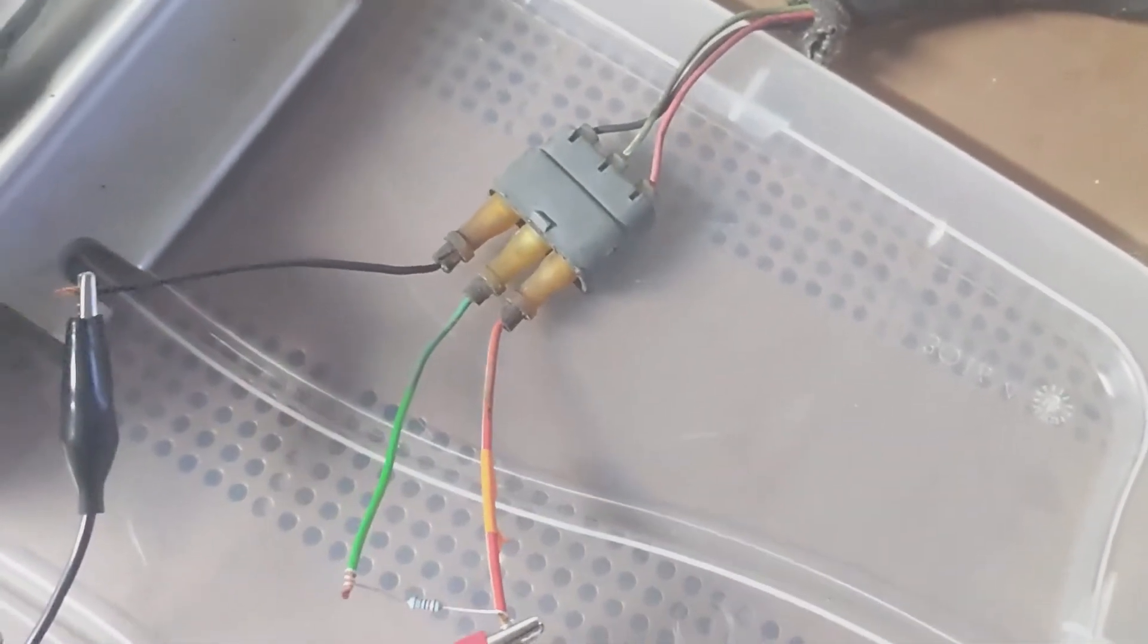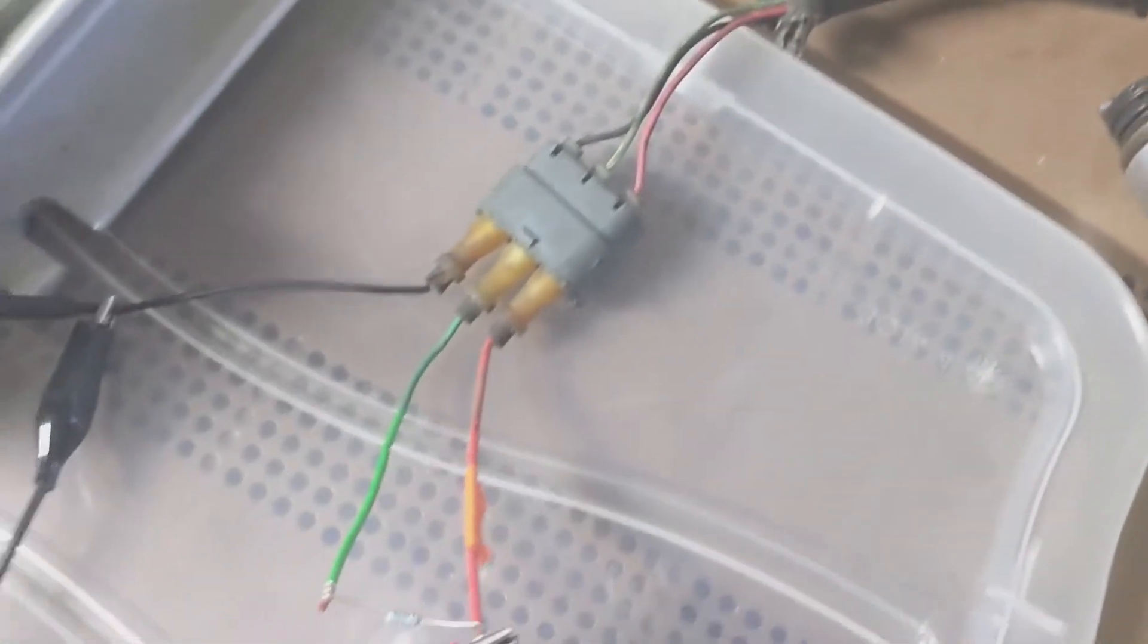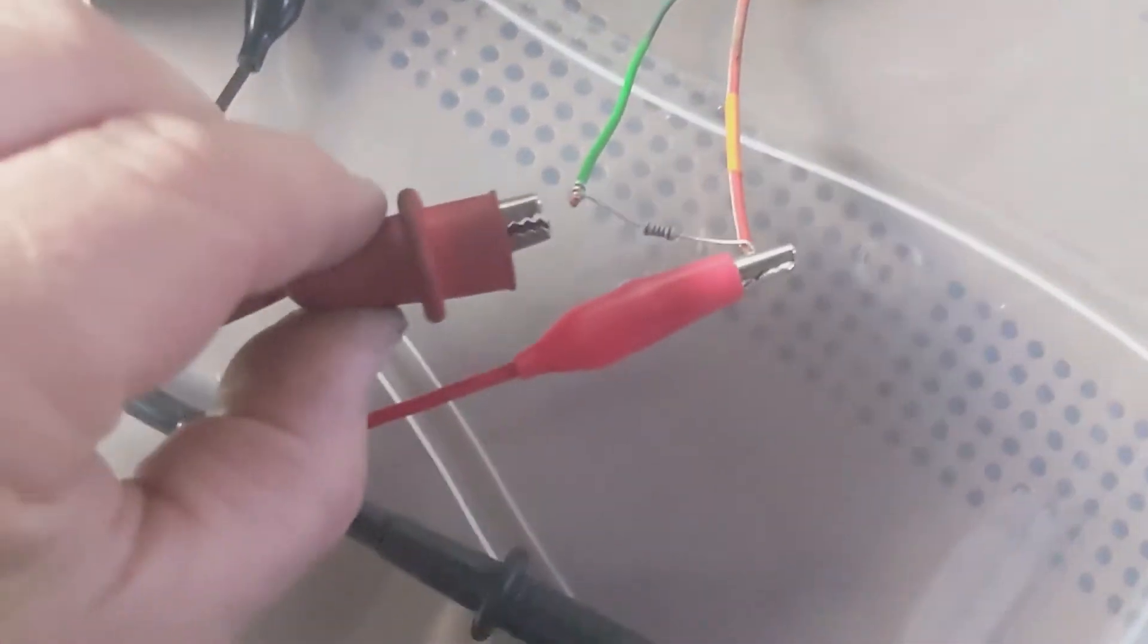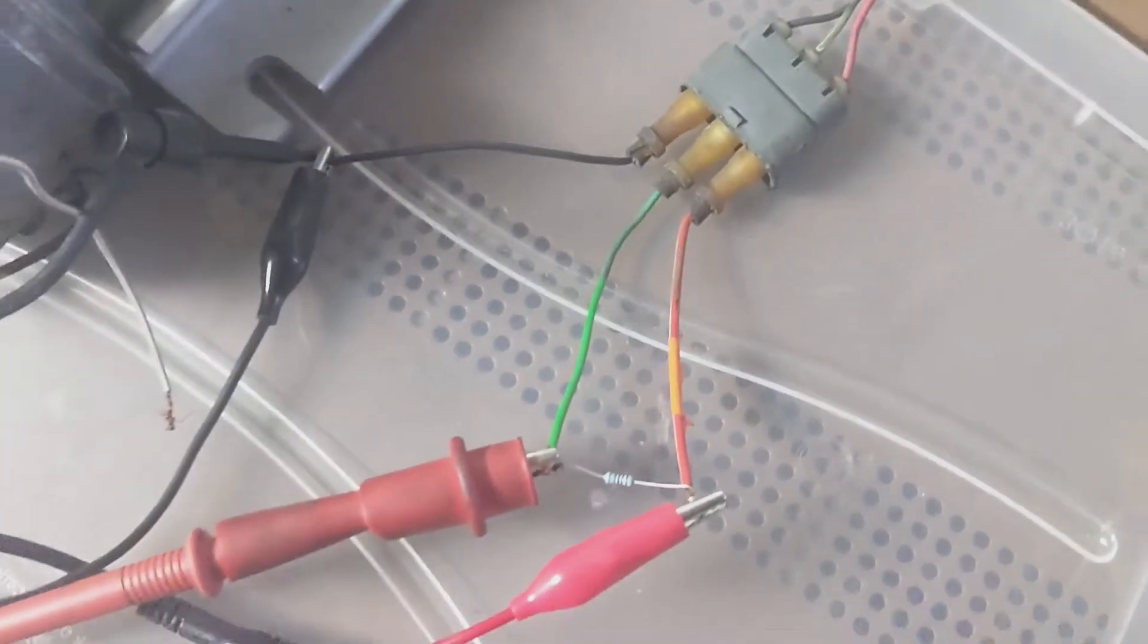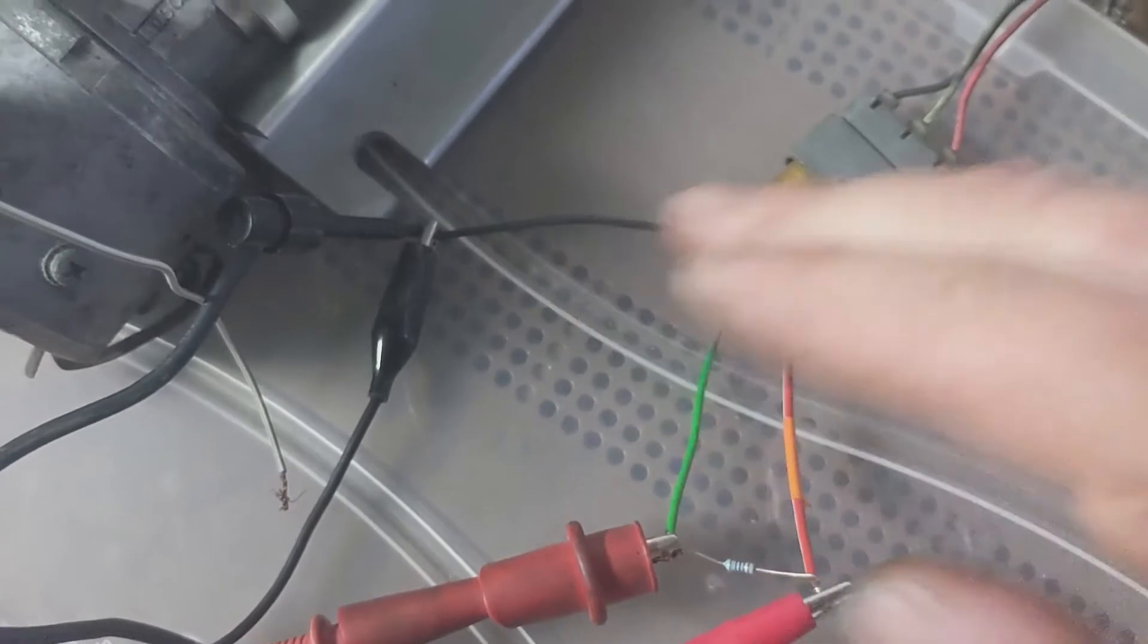I'm going to take the negative lead from my multimeter and connect it to the black wire as well. And I'll take the positive lead from my multimeter and connect it to the signal return of the crank-mounted Hall sensor. And it's green on these guys. You'll notice this is actual Saab wiring. So red is positive, green is signal, black is ground.